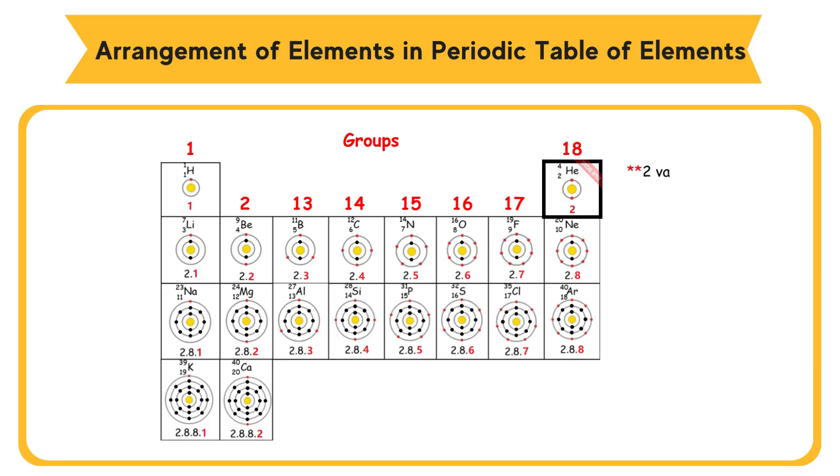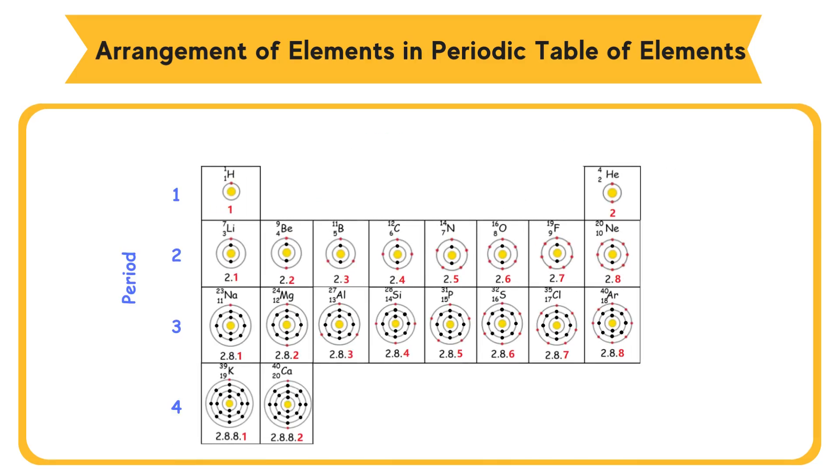Helium with 2 valence electron placed in group 18 is an exception. This is because helium shows similar inert chemical properties as other inert gases in group 18. The relationship between the electron arrangement and the period number of an atom: period number equals number of shells filled with electrons.